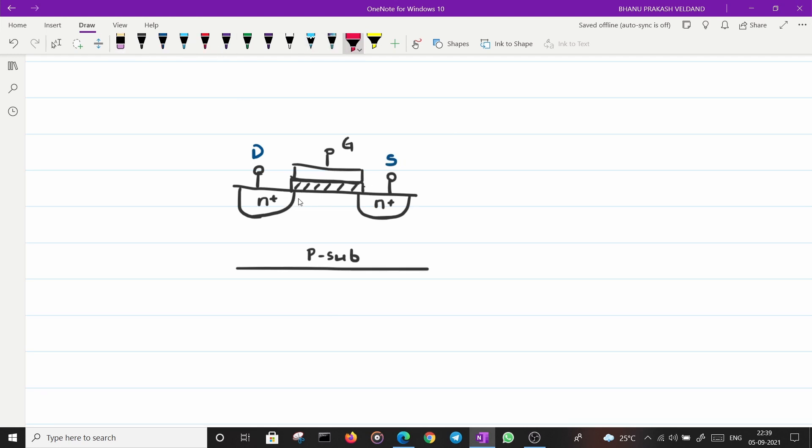We want most of the conduction to happen under the gate or between the drain and source terminals. But if you look at the things, there is a PN junction here and here. What happens when there is a PN junction is it forms a PN diode. PN junction always forms a diode. And diode will only allow current when it is in forward biased. That is, V plus minus V minus is greater than some cutoff voltage.